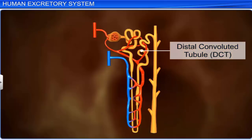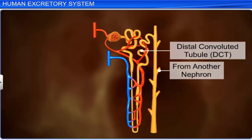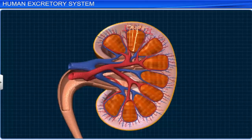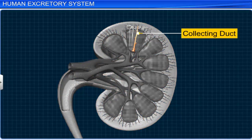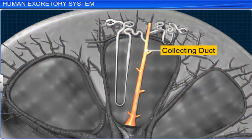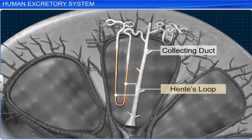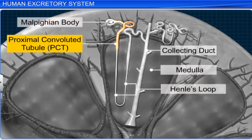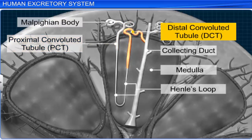The distal convoluted tubules of several nephrons open into a collecting duct. Several collecting ducts converge and pass through the medulla into the renal pelvis, which leads to the ureter. The collecting ducts, along with Henle's loop, lie in the medulla, while the Malpighian body, proximal convoluted tubule, and distal convoluted tubule of a nephron lie in the cortex of the kidney.